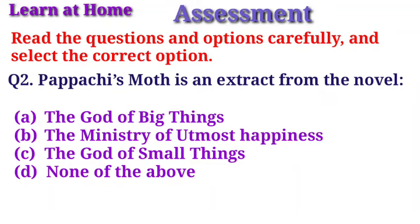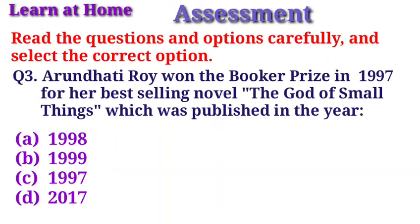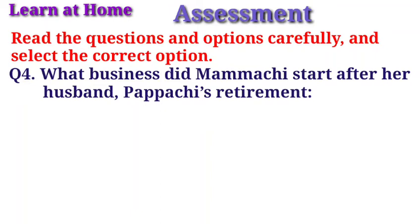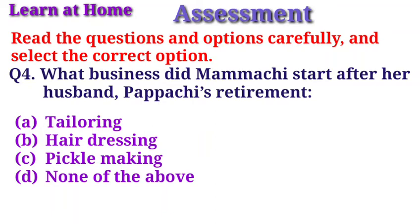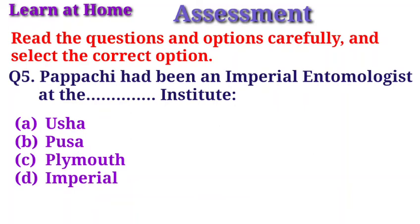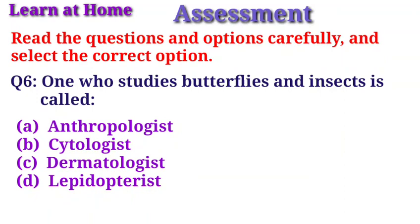Question 3: Arundhati Roy won the Booker Prize in 1997 for her novel 'The God of Small Things', which was published in the year — Option A: 1998; Option B: 1999; Option C: 1997; Option D: 2017. Question 4: What business did Mamachi start after Papachi's retirement? Option A: Tailoring; Option B: Hairdressing; Option C: Pickle making; Option D: None of the above. Question 5: Papachi had been an imperial entomologist at the — Option A: Usha; Option B: Pusa; Option C: Plymouth; Option D: Imperial Institute. Question 6: One who studies butterflies and insects is called — Option A: Anthropologist; Option B: Sightologist; Option C: Dermatologist; Option D: Lepidopterist.